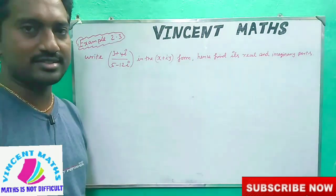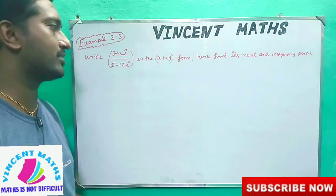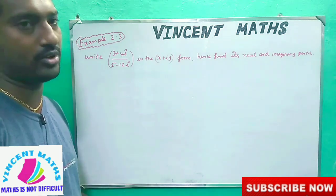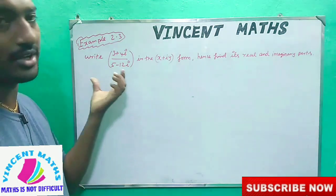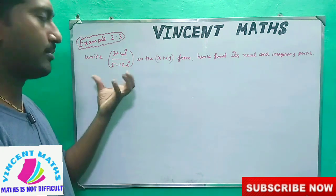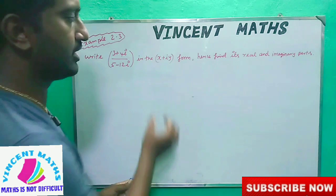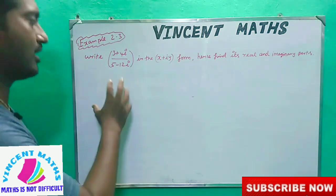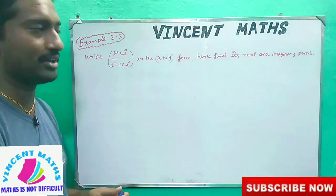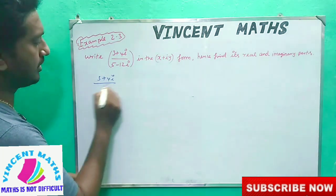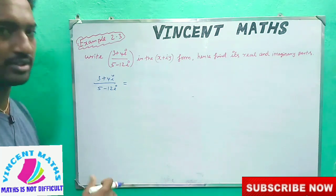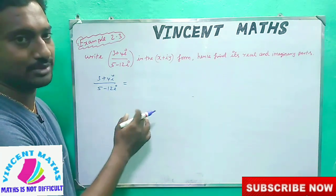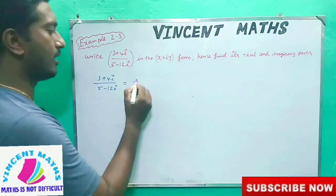x plus iy form is the complex number formula. We need to find the real and imaginary parts. What we do here is find the real parts and imaginary parts — it is very simple. Now, 3 plus 4i divided by 5 minus 12i is our expression.